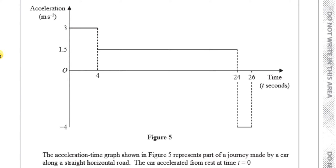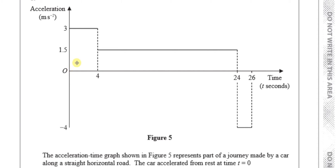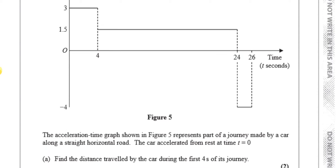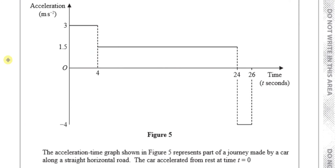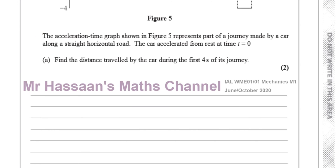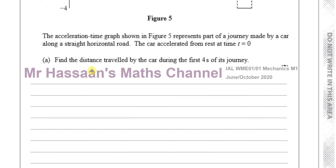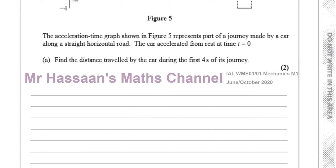The car accelerated from rest at time t equals 0, so the speed was 0 at time equals 0. And we want to find the distance travelled by the car during the first 4 seconds of the journey. Since it started from rest, we can use the SUVAT equations. Let's set up S, U, V, A, T.